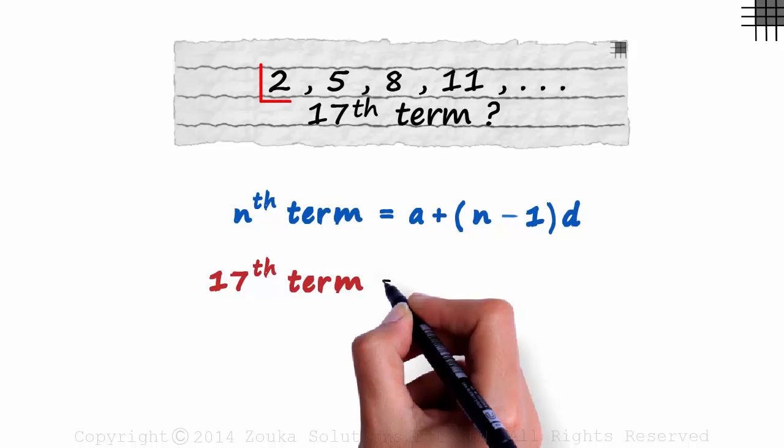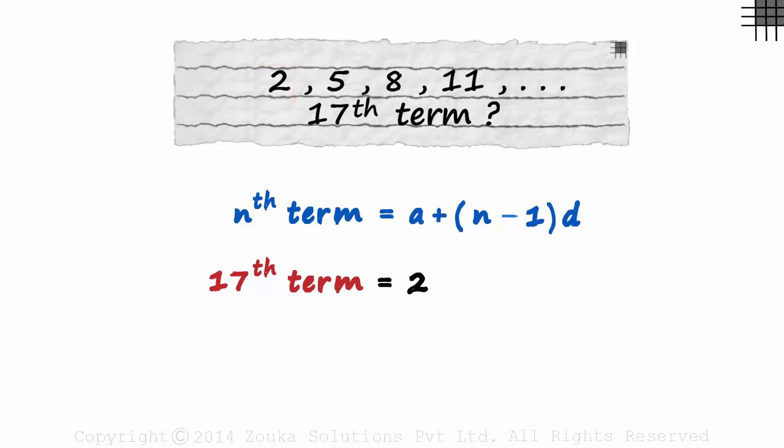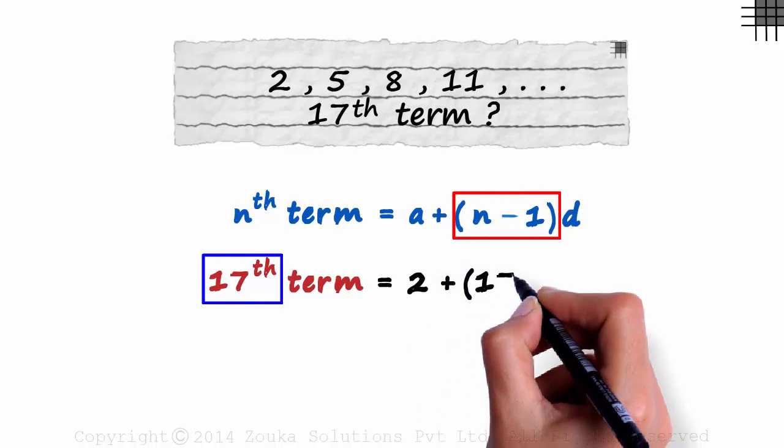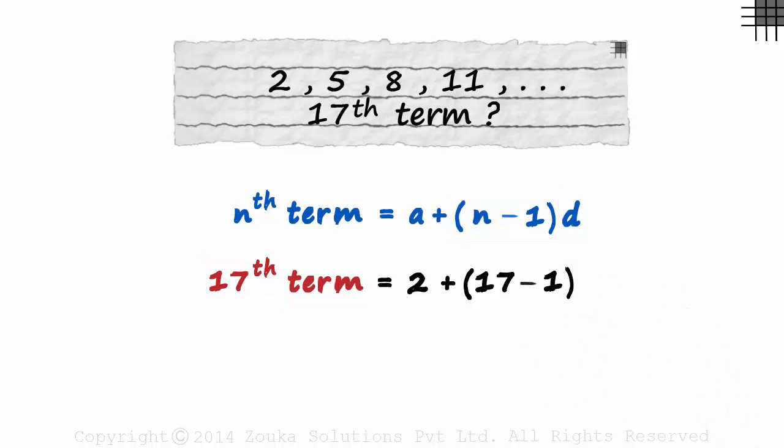Here, the first term is 2. As the term number is 17, we write this as plus 17 minus 1. The common difference is 3. Solving this, we get the 17th term of this sequence as 50.